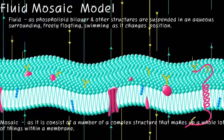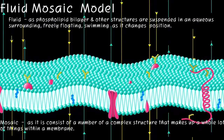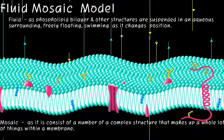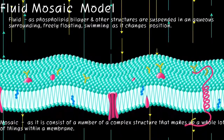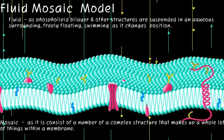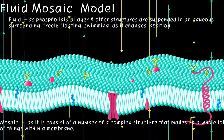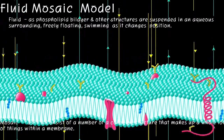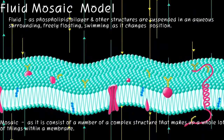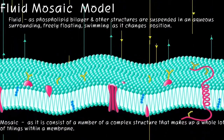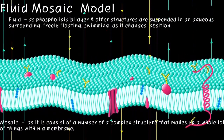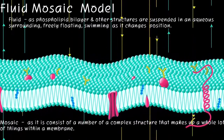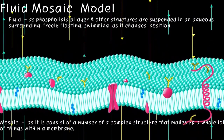The fluid mosaic model: it is fluid as the phospholipid bilayer and other structures are suspended in a fluid surrounding. Phospholipids and other structures are freely floating, swimming as they change position. It is mosaic as it consists of many complex structures that make up the cell membrane.